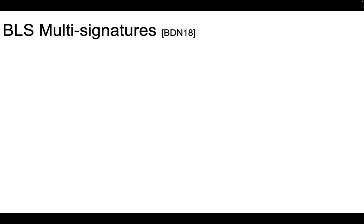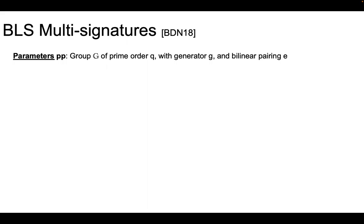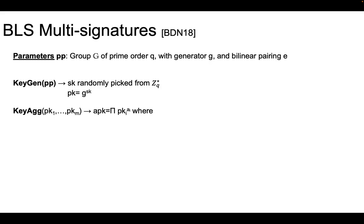To explain how our protocol works, let me start by recalling how the BLS multisignature scheme works — due to Boneh et al. In terms of public parameters, we assume a group G of prime order q with generator g and a bilinear pairing e. The key generation algorithm generates a secret key randomly picked from Z*_q, and the public key is simply g to the SK. Assuming a set of M signers with public keys PK_1 to PK_m, the aggregated public key is computed as the product of every individual key PK_i raised to a special exponent a_i, where a_i is computed as the hash of all the public keys plus that particular public key.